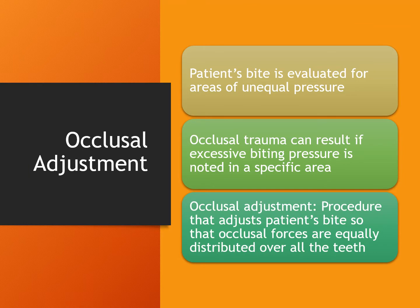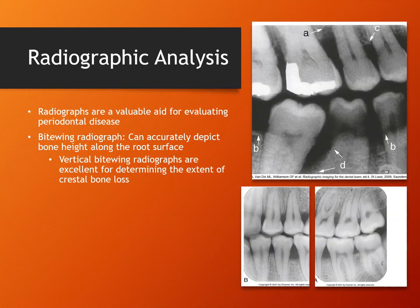Occlusal trauma does not cause periodontal pocket formation, but it can cause tooth mobility, destruction of bone, migration of teeth, and temporomandibular joint pain. The accuracy of radiographs is critical in the diagnosis of periodontal disease. Bite wings can accurately show bone height along the root surface. If the radiograph shows low bone height, this is a sign of periodontal disease.